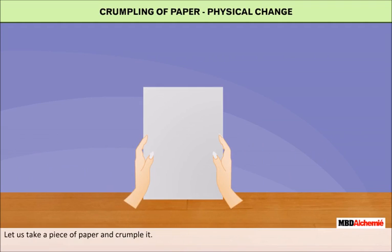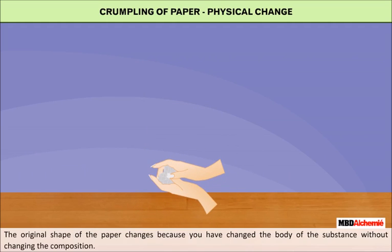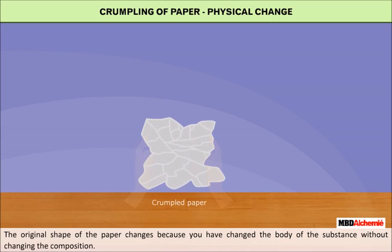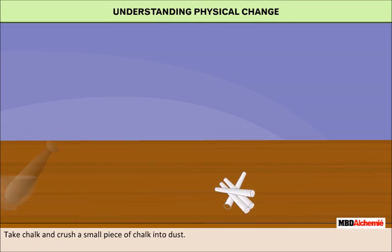Take a piece of paper and crumple it. What happens to the paper? The original shape of the paper changes because you have changed the body of the substance without changing its composition. You have only changed the appearance, but not the composition of the paper. So you have not made a chemical change, but a physical change.